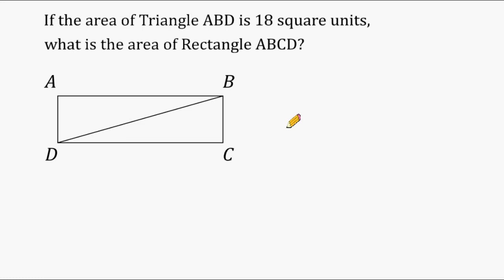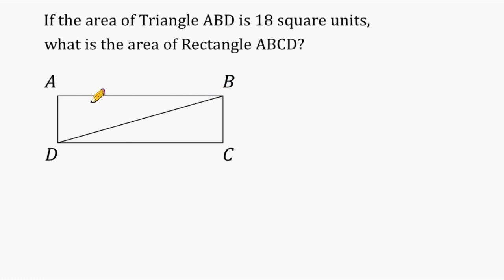This first problem reads that the area of triangle ABD has an area of 18 square units, and we have to figure out the area of rectangle ABCD. Triangle ABD covers exactly half the area of the entire rectangle, so this other triangle must also have an area of 18 square units. We can just double 18, which gives us 36 square units.